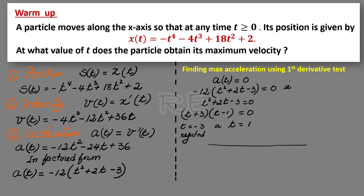Now, using a table of signs for t equal to 1: at t equal to 1 the function will be equal to 0. Before 1, we test t equal to 0. Negative 12 will be negative. At t equal to 0, t plus 3 equals 3, which is positive, and t minus 1 equals negative 1, which is negative. Negative times negative times positive is positive, so to the left of 1 the function is positive.